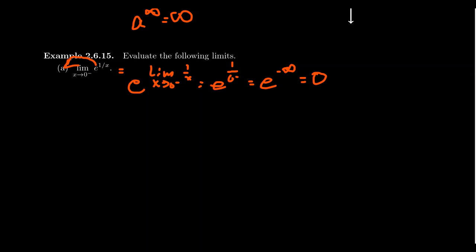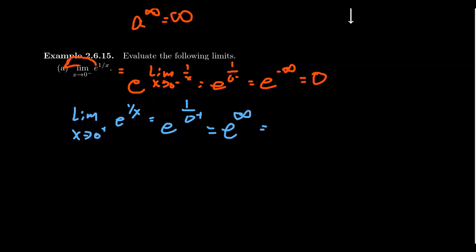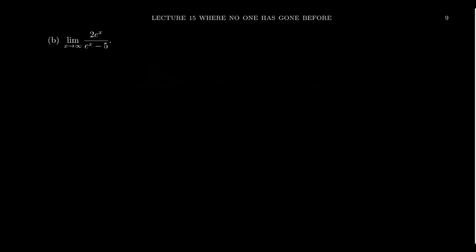Notice how this differs from the limit as x approaches zero from the right of e to the one over x. There, one over x goes to positive infinity, so e to the infinity gives you infinity. This function approaches zero from the left but infinity from the right, giving it a one-sided vertical asymptote — because exponential functions have a one-sided horizontal asymptote on the left but explode on the right.